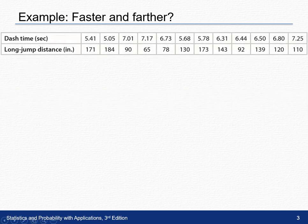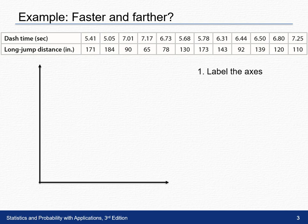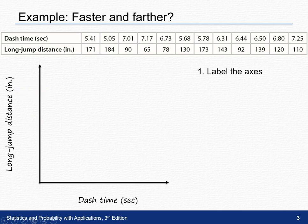To do this, as you can see, we have two quantitative variables. To make any graph, we want to begin by labeling the axes. To create a scatter plot, we're going to create a set of xy-axes and label them with dash time on our x-axis and long jump distance in inches on our y-axis.